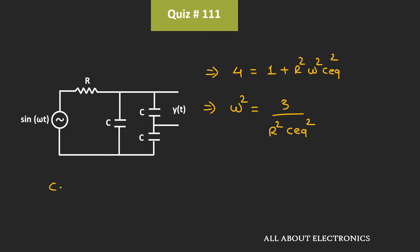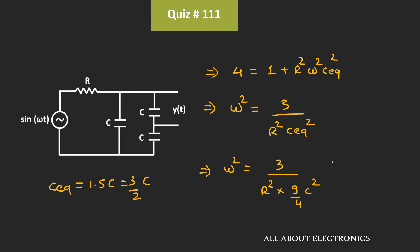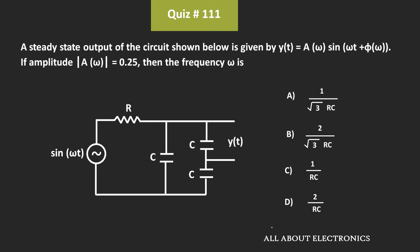Since C_eq is equal to 1.5C, that is 3/2 times C, we get ω² equal to 3 divided by R² times 9/4 times C². Simplifying, ω is equal to 2 divided by √3·RC. So this will be the value of ω. For the given question, B is the correct answer.